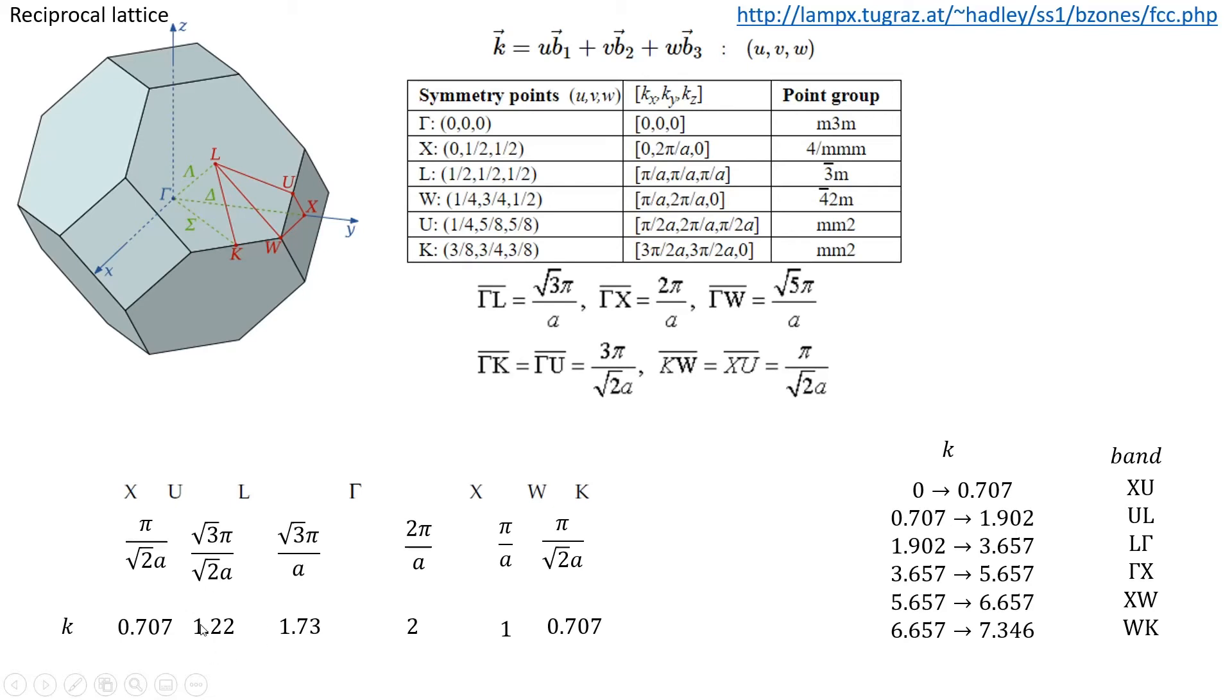For the UL band, I know the length should be 1.22, but also the U point starts at 0.707, so I add 0.707 to 1.22, which gives me 1.902. So k sweeps from 0.707 to 1.902, and so on.